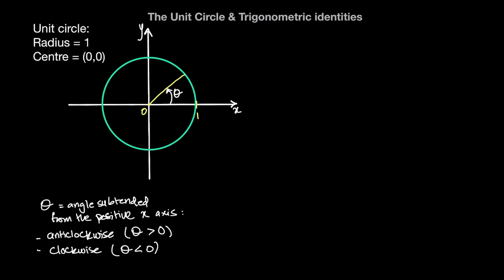Now the question is, wherever the radius ends up once I subtend it by an angle of theta, we want to be able to express the x and y coordinates in terms of the angle theta that we subtend the radius by. So how do I express the x and y coordinates in terms of theta?